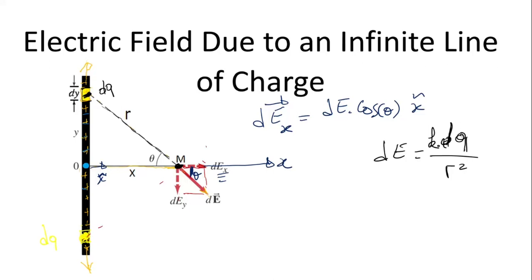This dQ has a density and this density is uniform. That means the distribution of charge inside this wire is completely uniform. If you take the total charge over the total length of the wire, it will be the same as taking the element of charge over the element of length. We call this lambda — uniform density. Uniform means lambda equals Q over L, which is identical to dQ over dL. This is what we mean by uniform density.